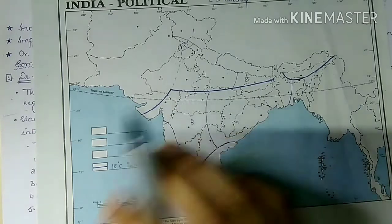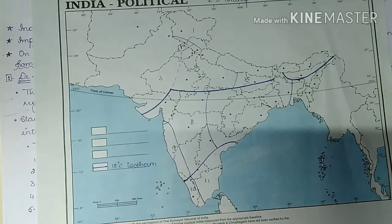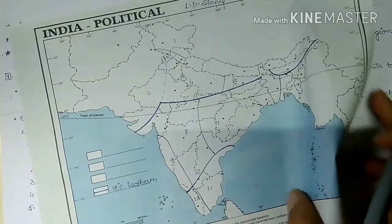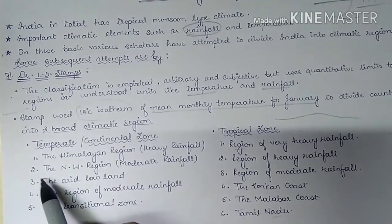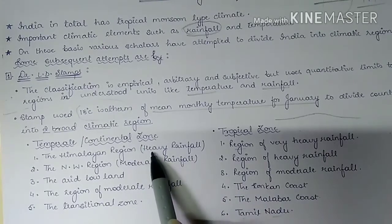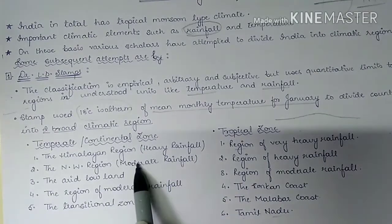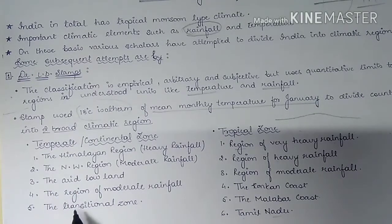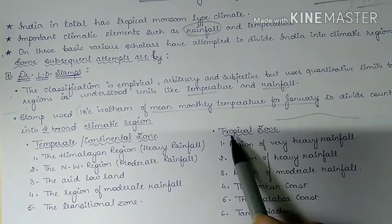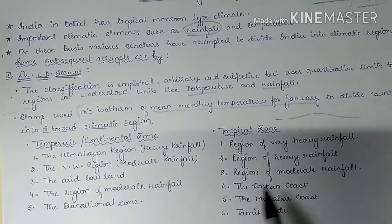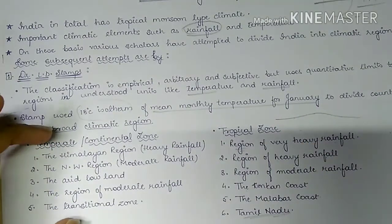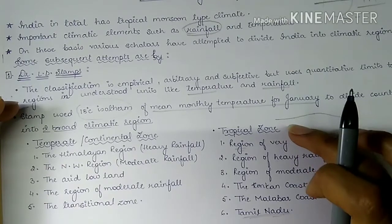These two broad zones are further divided into a total of 11 sub-climatic regions. The temperate continental zone has five sub-parts: the Himalayan region (heavy rainfall), the northwestern region (moderate rainfall), the arid lowland, the region of moderate rainfall, and the transitional zone. The tropical zone is divided into six sub-categories: very heavy rainfall, heavy rainfall, moderate rainfall, Konkan coast, Malabar coast, and Tamil Nadu.